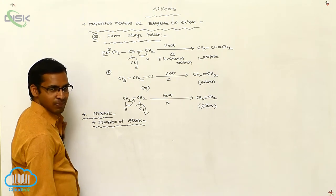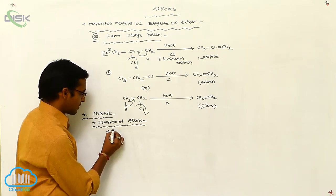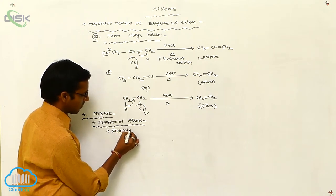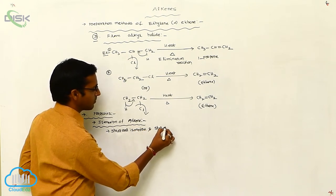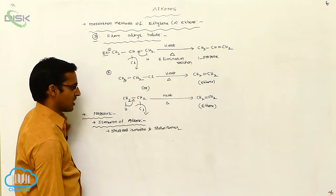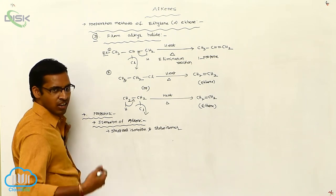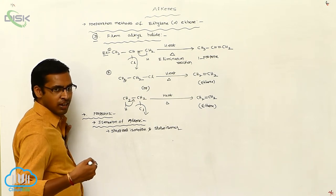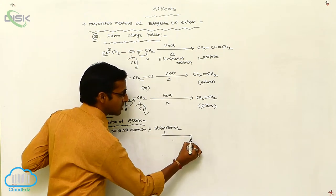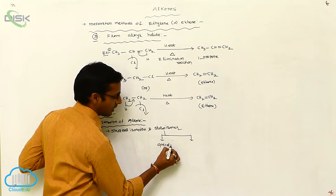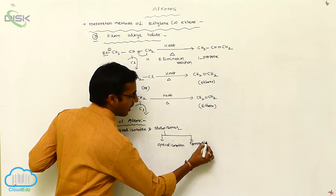Generally, alkenes exhibit structural isomerism, whereas alkenes also exhibit stereo isomerism. We already know that structural isomerisms are of different types — like chain isomerism, positional isomerism, metomerism, and tautomerism. But stereo isomerisms are two types: optical isomerism and geometrical isomerism.